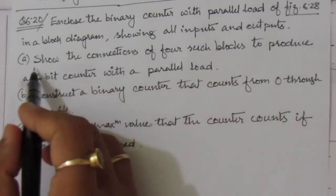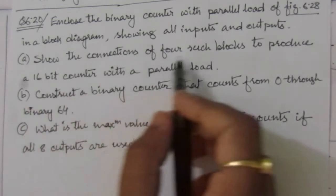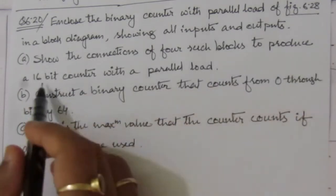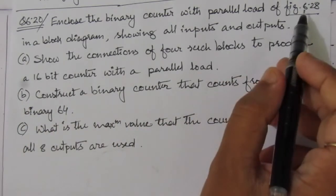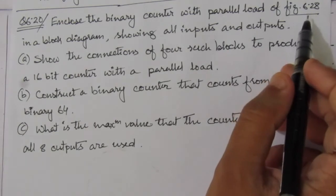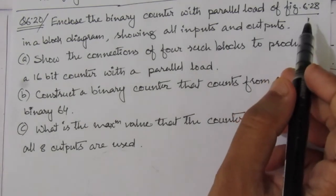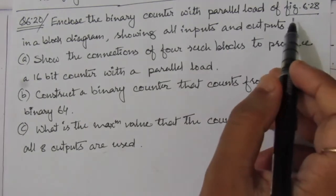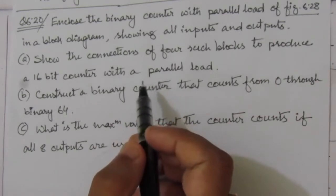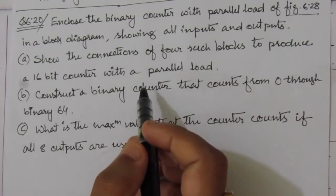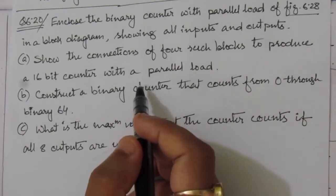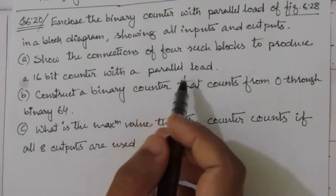The first part of the problem asks us to show the connections of four such blocks to produce a 16-bit counter. Here in figure 6.28 we have 4-bit input and 4-bit output, so we have to make it a 16-bit counter with parallel load — that means 16 parallel inputs and 16 parallel outputs.